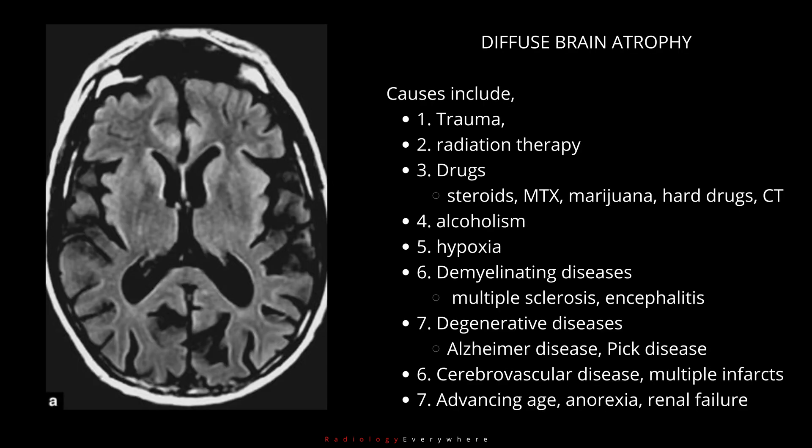Diffuse brain atrophy. Causes include: 1. Trauma. 2. Radiation therapy. 3. Drugs such as steroids, methotrexate, marijuana, hard drugs, and chemotherapy.